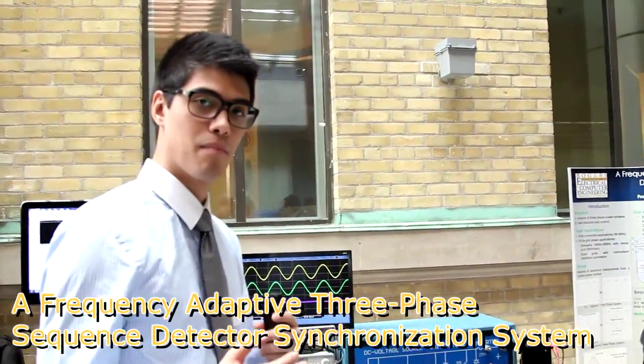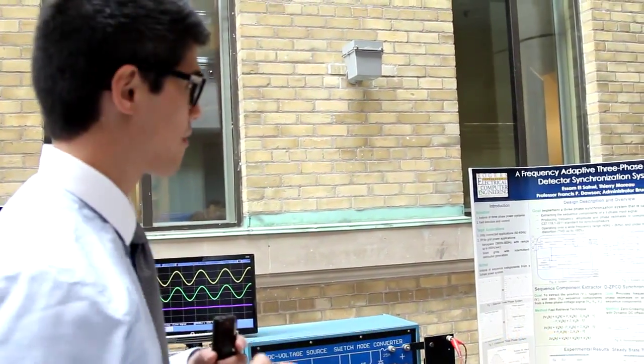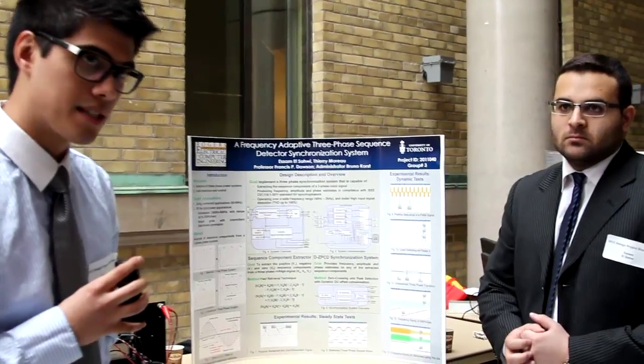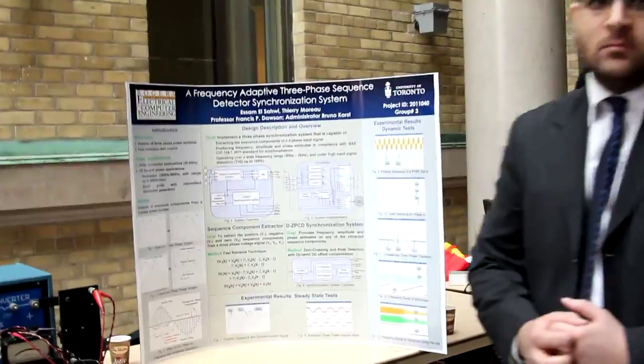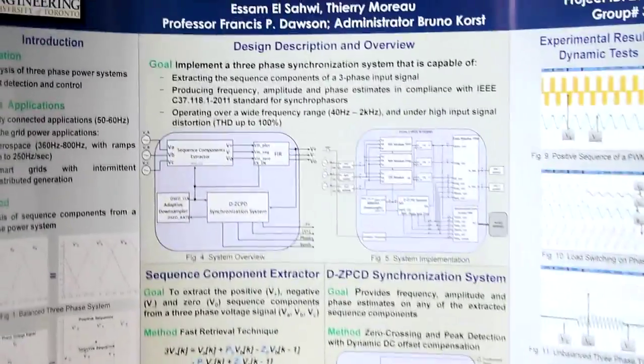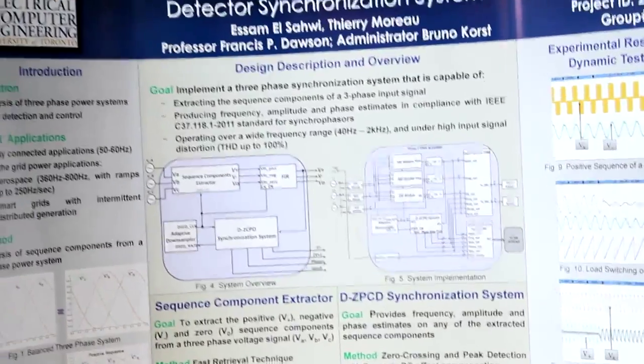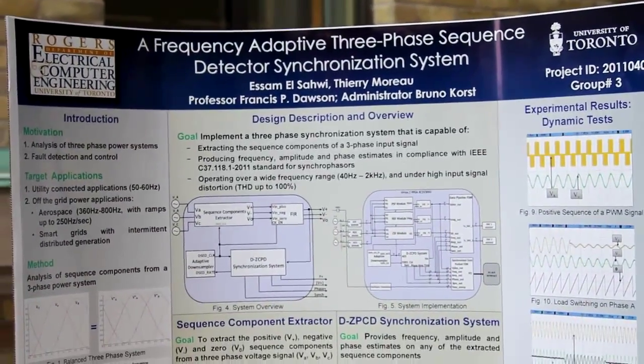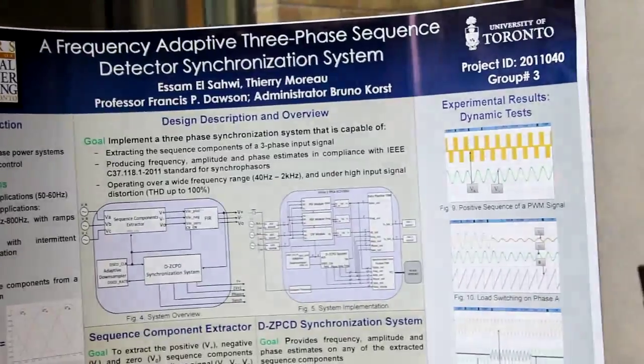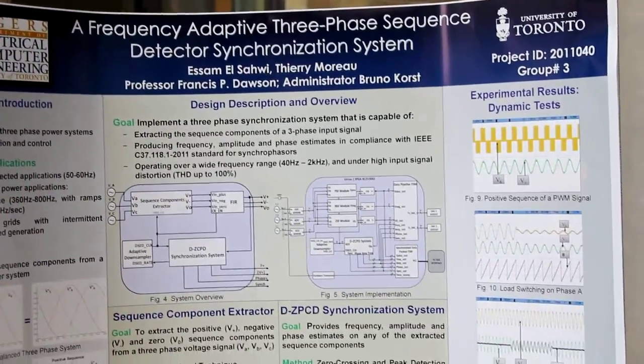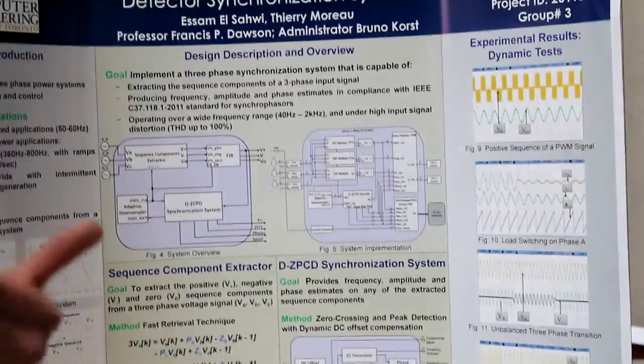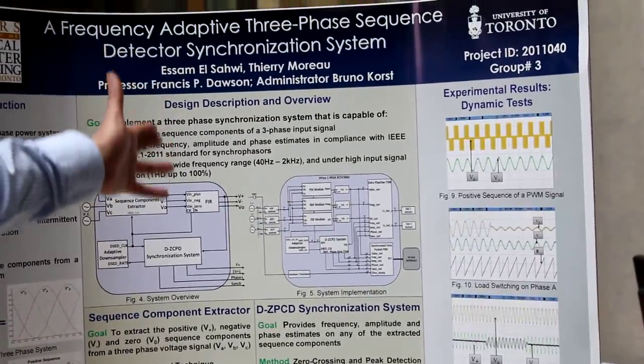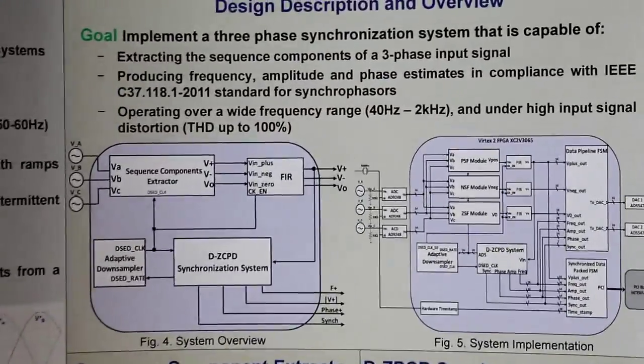What we did is that we implemented on an FPGA a three-phase sequence detector synchronization system that was developed here at University of Toronto in the Power Systems Lab and it's the first time we've implemented it. We've designed our system on an FPGA so that it is actually frequency-adaptive and we can operate it at a very wide range of frequencies, not only just 60 hertz but also our system is designed to operate from 40 hertz to 2 kilohertz, which is actually groundbreaking.